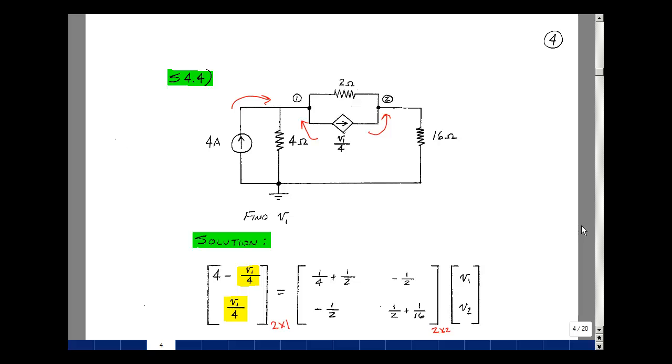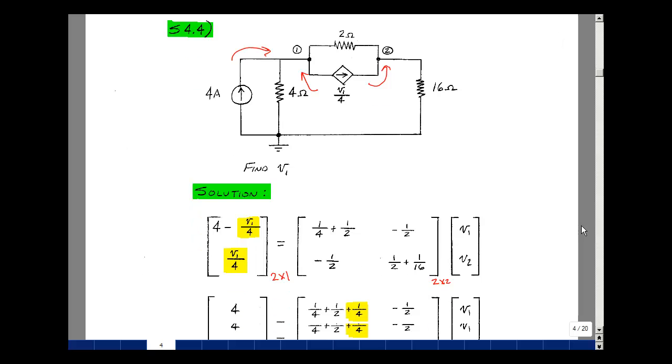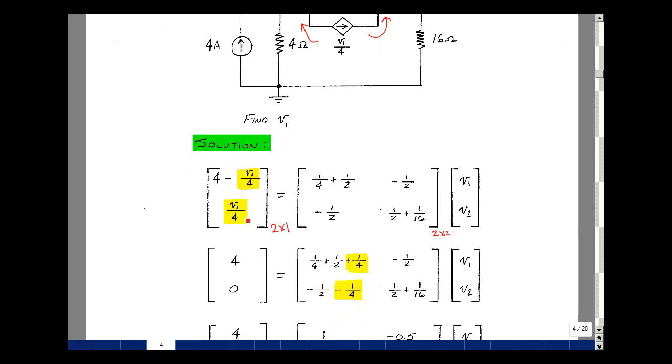All right, so we've got two equations and two unknowns, but our controlled source gave us a term on the left-hand side of the equation, but V1 is on the right-hand side of the equation. So we could bring that over to this side of the equation, because this column is associated with V1. So bring this on the other side of the equation, just left with a 4, and then when you bring it over here, it becomes a plus 1 quarter times V1.